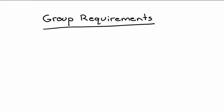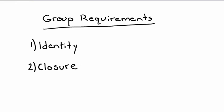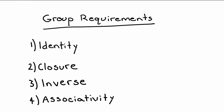In the last lesson, we were introduced to the idea of groups and representations. We learned that in order for a set of elements to be a group, it must satisfy four requirements: it must contain the identity, it must satisfy closure, it must contain inverse elements, and the operation for combining elements must be associative. We looked at many examples of groups and non-groups. In this lesson, let's look at some applications of groups to real physical situations.